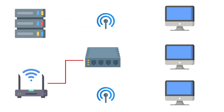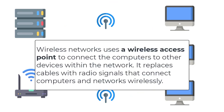Wireless networks operate somewhat differently. They use a wireless access point to connect computers to other devices within the network, replacing cables with radio signals that connect computers and networks wirelessly.